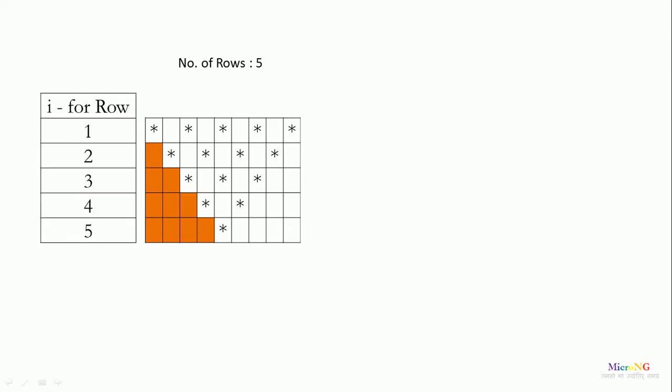For counting the number of rows, we are using an index variable i. Depending upon the value of the number of rows, that many number of values have to be taken for i. So if the number of rows is 5, the value of i will go from 1 to 5.